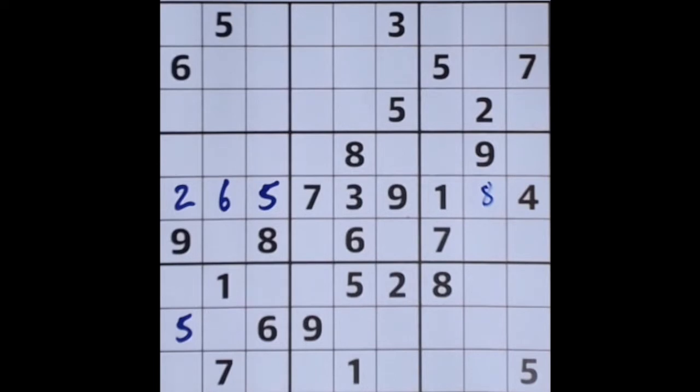Okay, so now this 7 blocks these two squares from being 7, this 7 stops this square from being 7, and this 7 up here stops. That means the only empty space in that row where we could place a 7 has to be there, so in it goes.